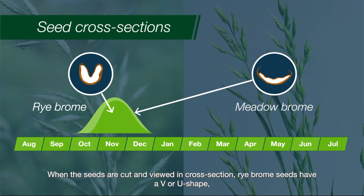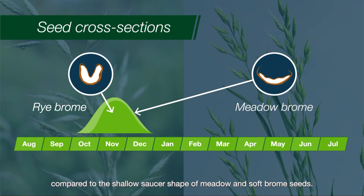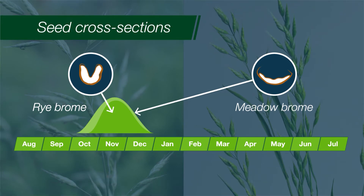When seeds are cut and viewed in cross section, rye brome seeds have a V or U shape compared to the shallow saucer shape of meadow brome and soft brome seeds.